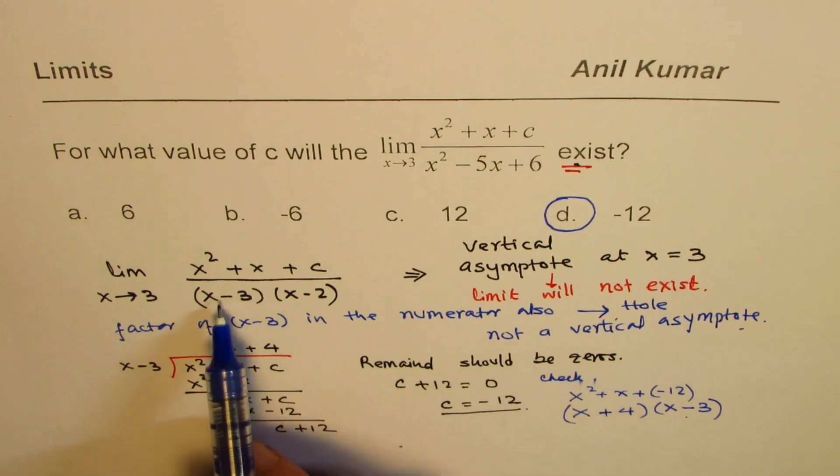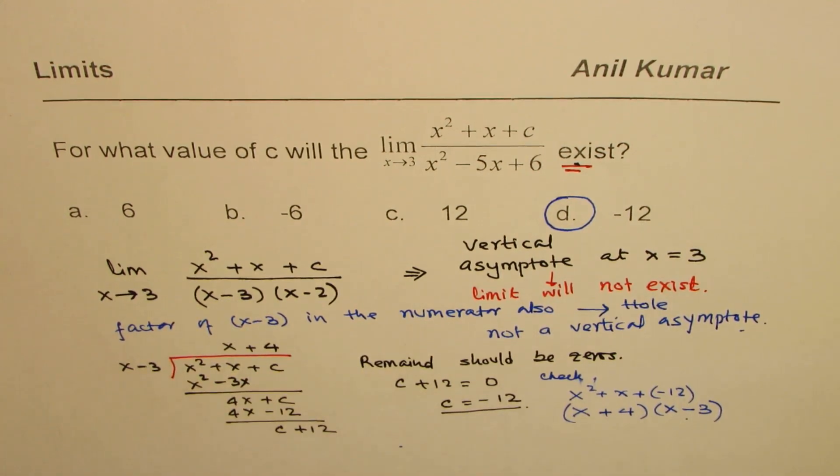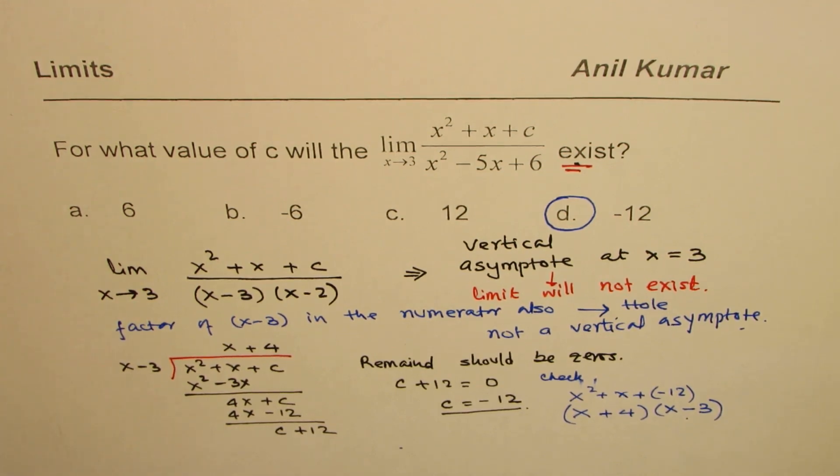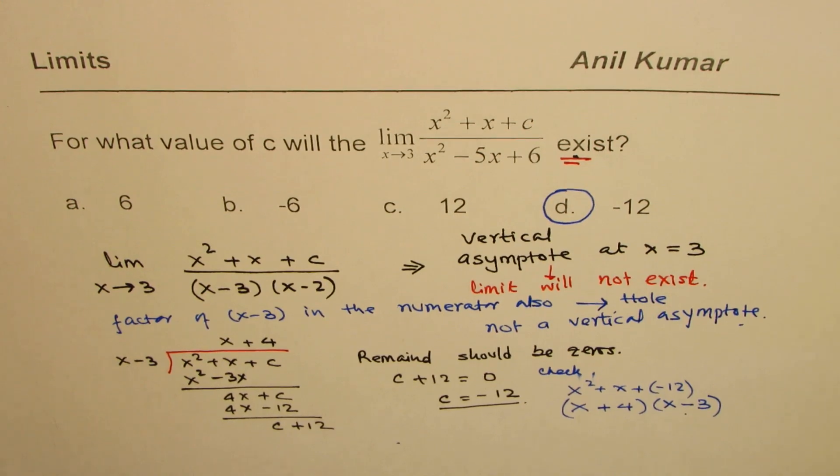So this and that will cancel, leading to a hole. And therefore, we will ensure that the limit will exist at x equals to 3. You get an idea? So that is how you should be solving such a question.